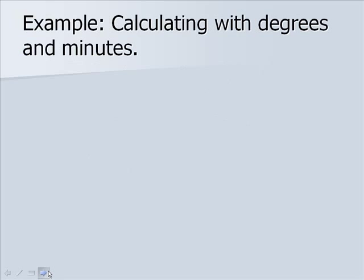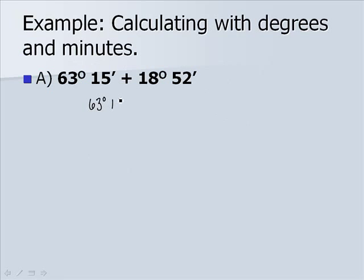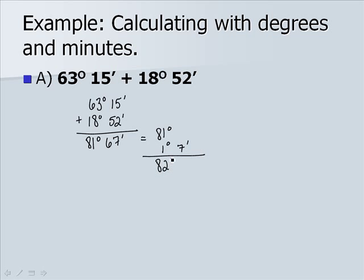Let's calculate with degrees and minutes. We want to add 63 degrees 15 minutes and 18 degrees 52 minutes. We can add them vertically, and we get 81 degrees 67 minutes. But this is actually equal to 81 degrees plus 1 degree 7 minutes, which is 82 degrees 7 minutes, because 67 minutes is 1 degree plus 7 minutes.